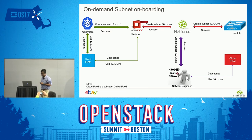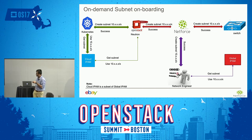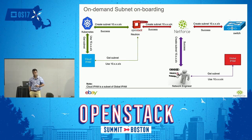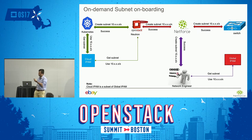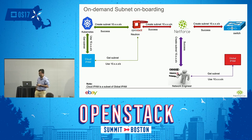This is what on-demand subnet onboarding looks like. The consumers are Kubernetes, Network Engineer, and Neutron itself. Kubernetes is a heavy consumer of our IP space because they need more IPs for pods compared to VMs. We have our Cloud IPAM, which is a subset of Global IPAM. Kubernetes calls Cloud IPAM to get a block, then uses Neutron to push the subnet, and NetForce actually pushes the subnet to the switch. If it's BGP, it will be directly advertised and is fully functional and ready to use for the VM.